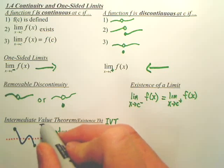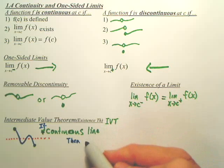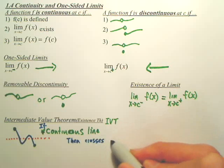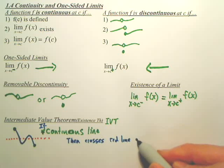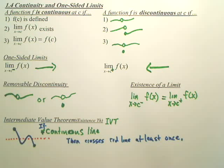So, if continuous line, then crosses red line at least once. If it's a continuous line from A to B, then it will cross this red line, whatever red line is given, whatever line is given, at least once. It can cross more. It's just proving there's an existence of a point somewhere between these two points that will cross that line. It can cross more than twice.